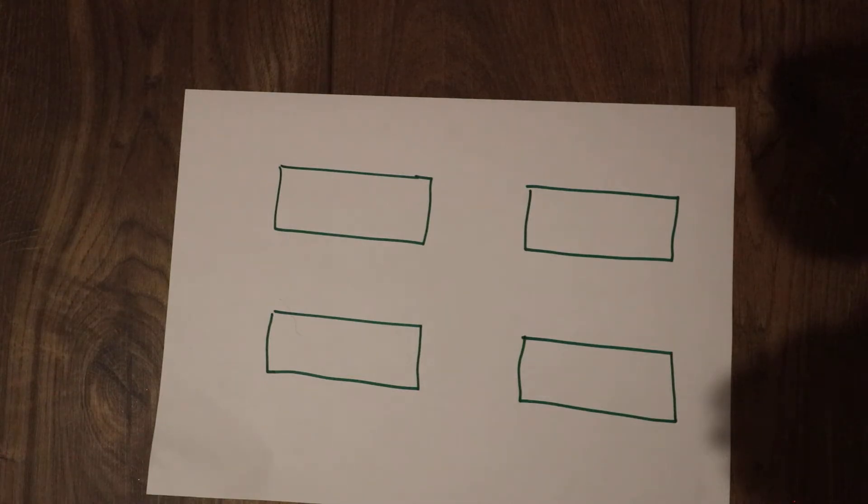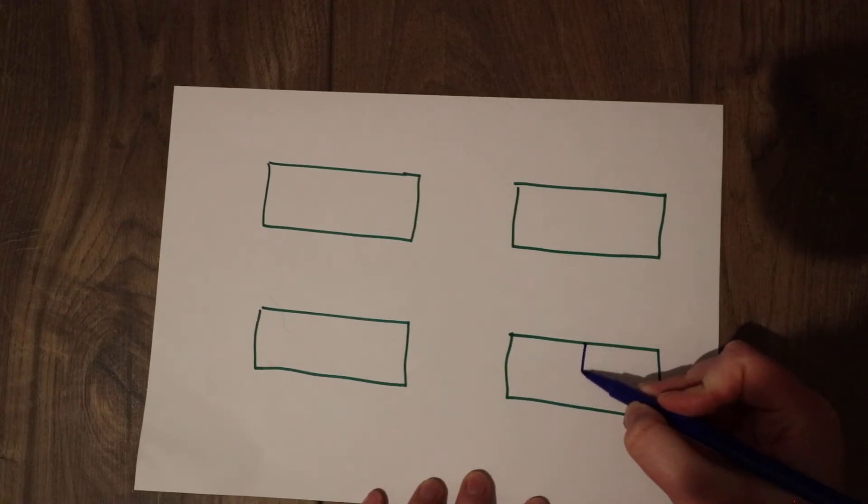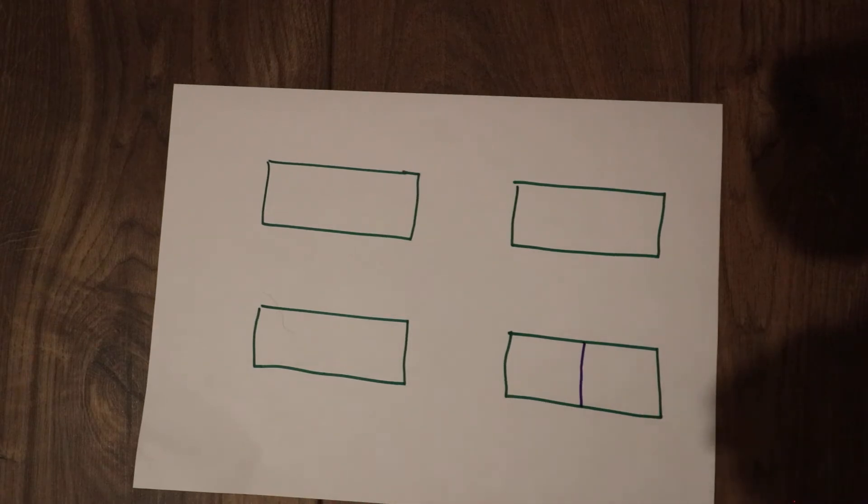I'm going to have a go to see if you've got them right. I'm going to split my rectangles different ways. I need to make sure I've got half and half. This one we did earlier, that's an easy one. We've got the same on both sides.